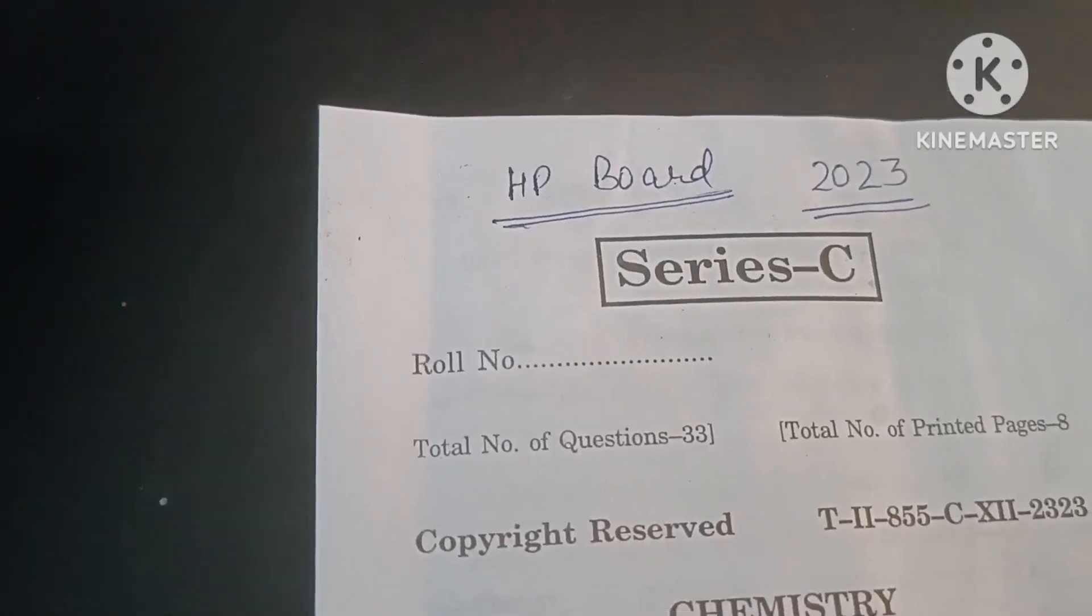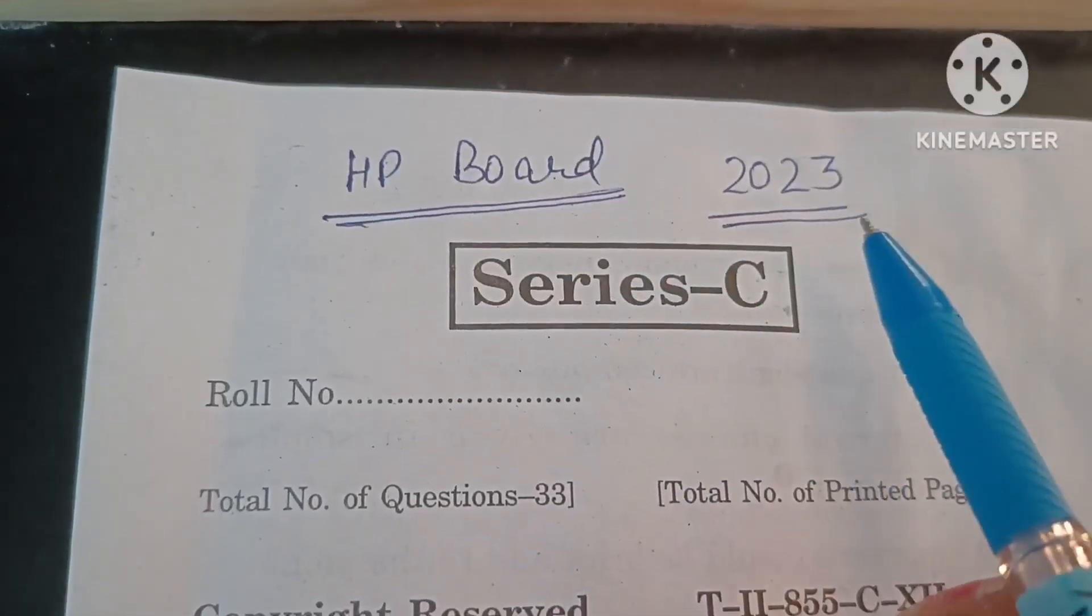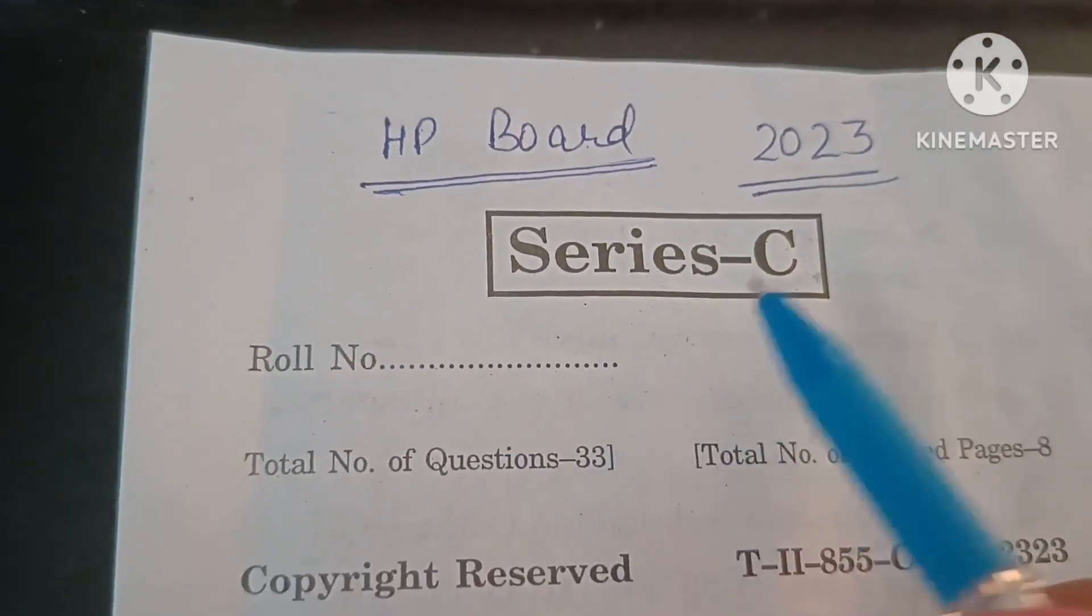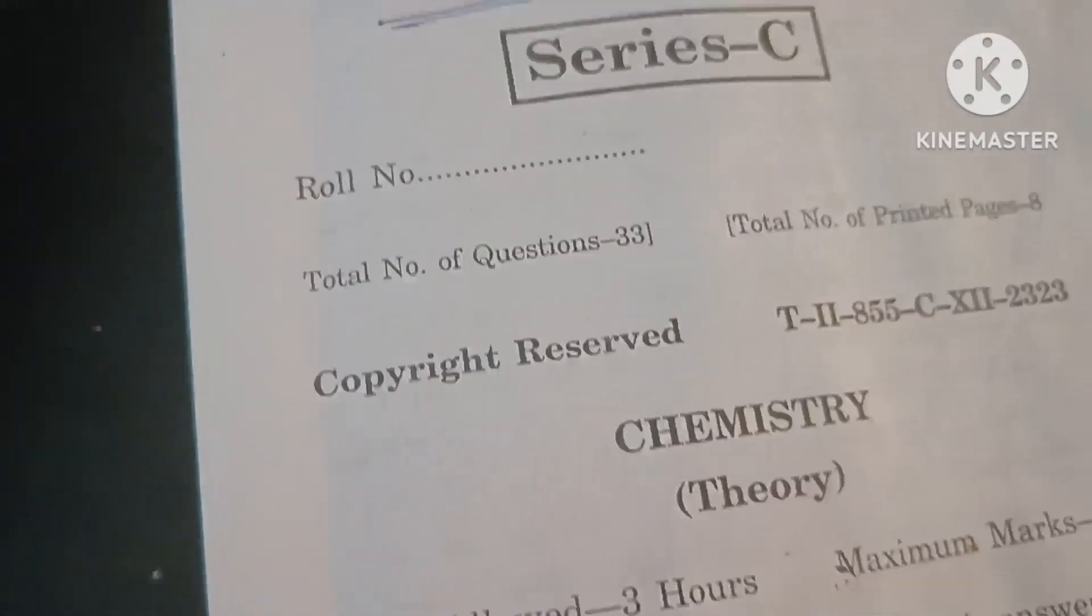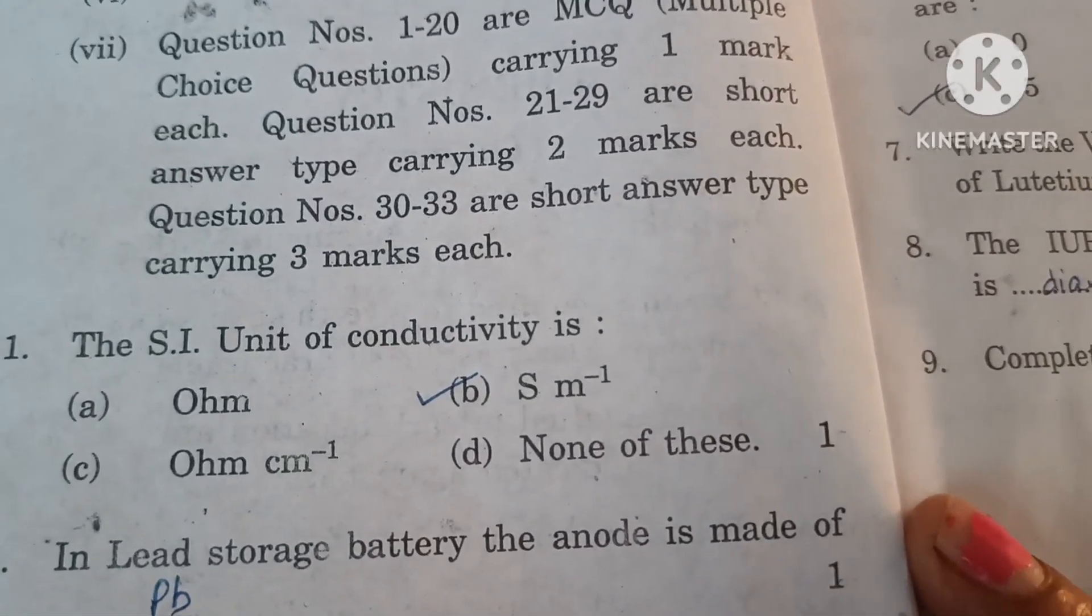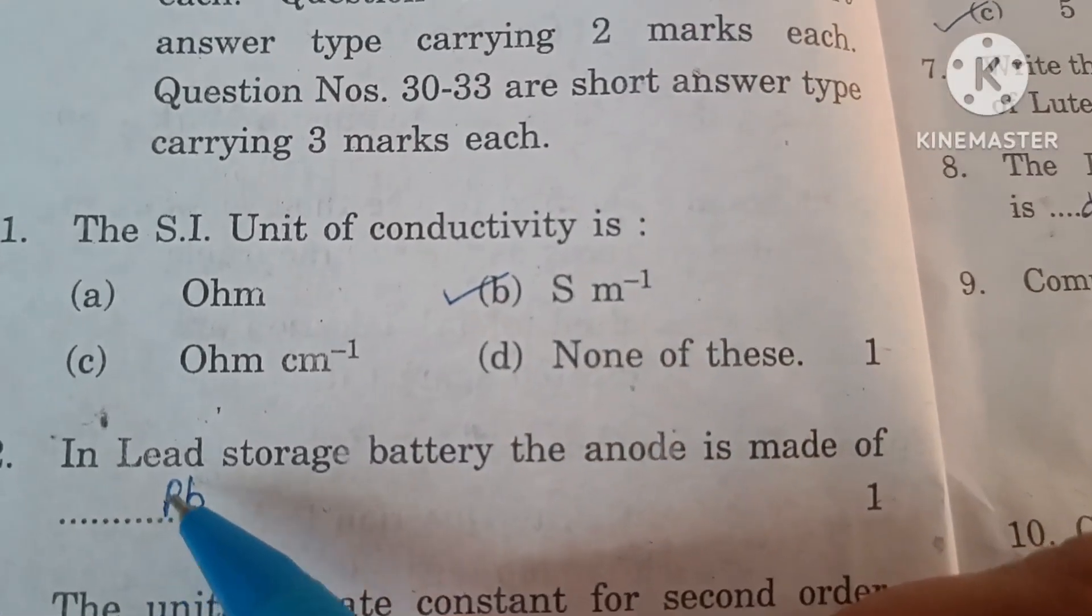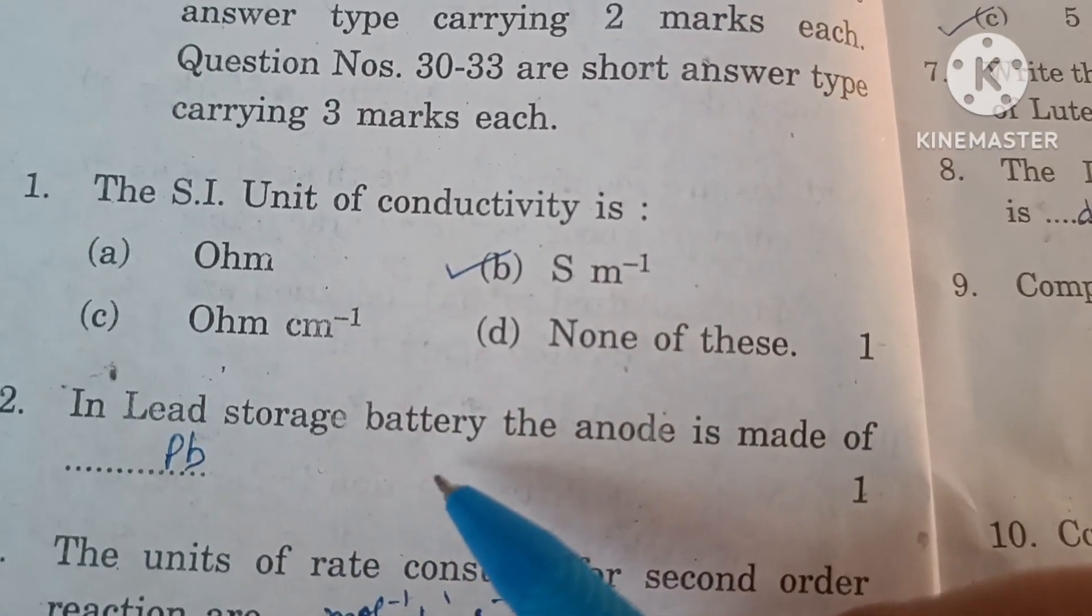Good morning students, welcome to Bindu Dadwal Chemistry Lessons. We will solve the HP Board 2023 Chemistry question paper. Let us begin solving. The SI unit of conductivity is siemen meter inverse. In lead storage battery, the anode is made up of lead.